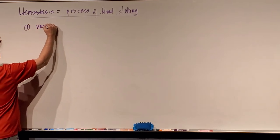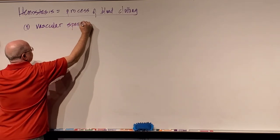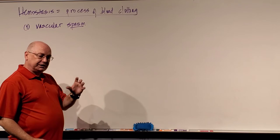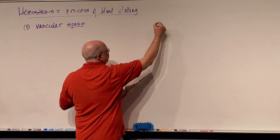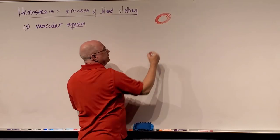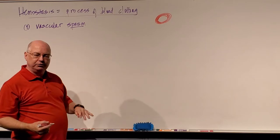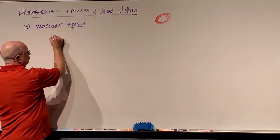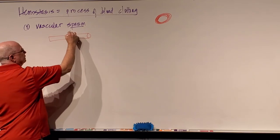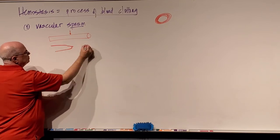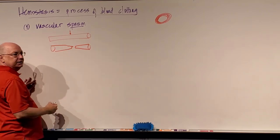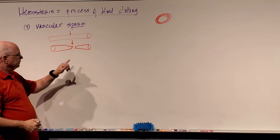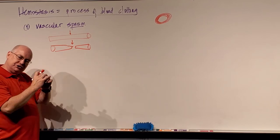The first step in hemostasis is called vascular spasm. A spasm is a cramp. If I look at an artery or vein in cross section, the wall has a thick layer of smooth muscle. Veins also have that smooth muscle but it's less thick. It's called the tunica media. Anytime you cut a muscle, the muscle will contract. It will spasm. So if you break a blood vessel, the muscle in that vessel is going to spasm and decrease the diameter of the blood vessel where the cut is. That's vascular spasm.